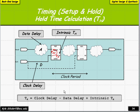The formula is: clock delay plus intrinsic hold time minus data delay. The reason we subtract data delay is because the longer it takes the data to arrive and change, the longer it will stay stable after the clock edge before the next value comes in. So data delay actually works in our favor for hold timing.